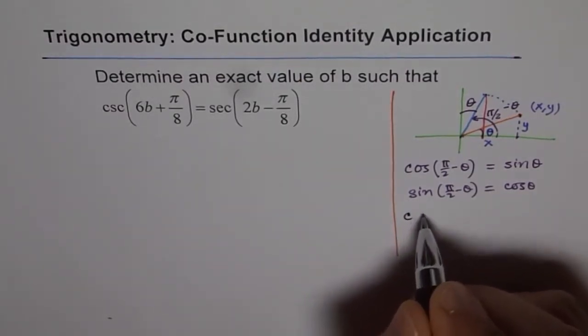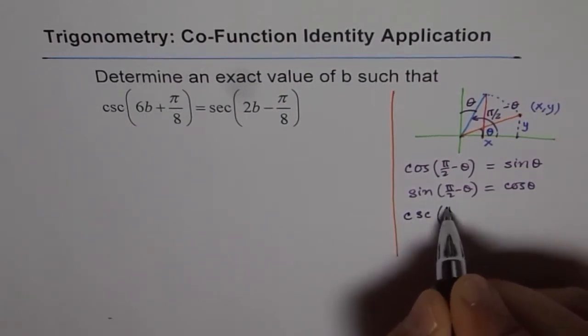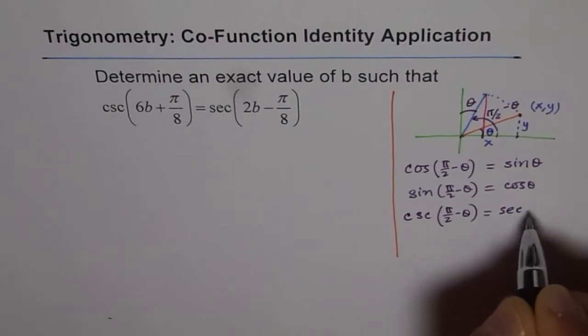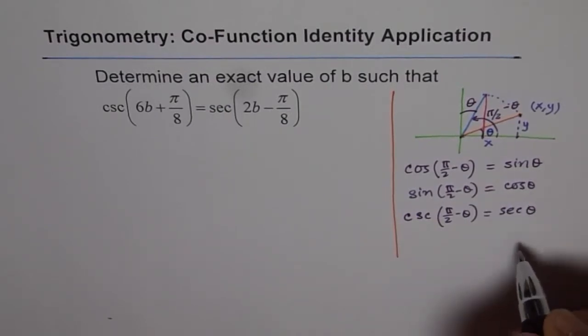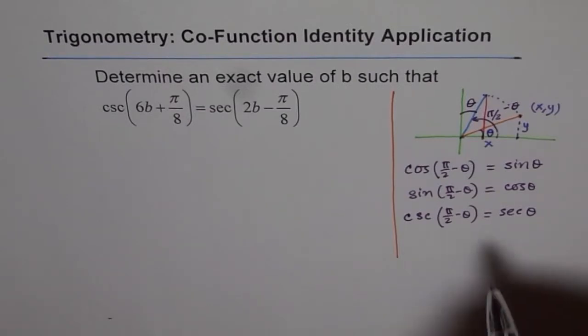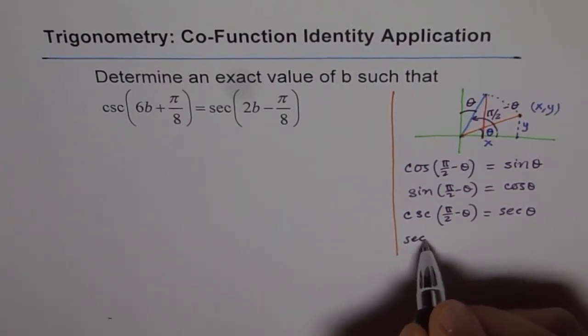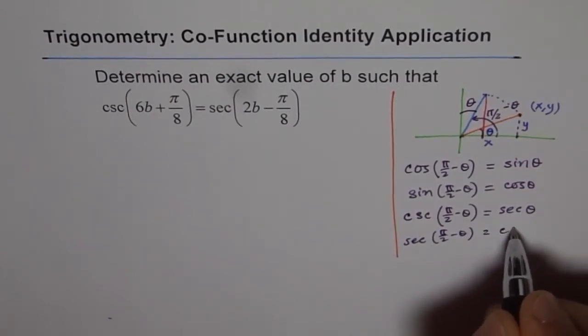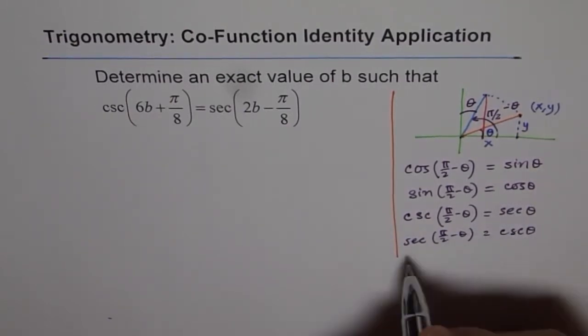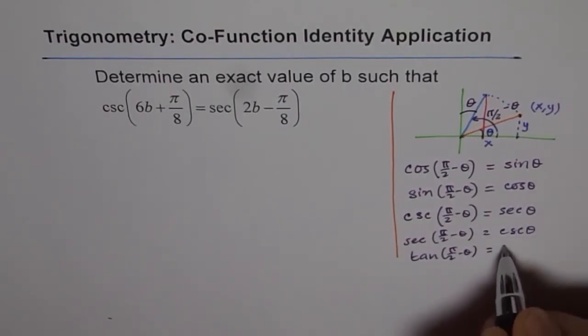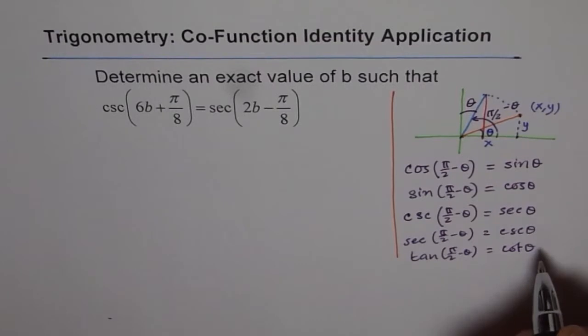Their reciprocals will also change. That means cosecant of π by 2 minus theta becomes secant theta. We could write the other way also: secant of π by 2 minus theta equals cosecant theta. Same is true for tan: tan of π by 2 minus theta equals cotangent theta.